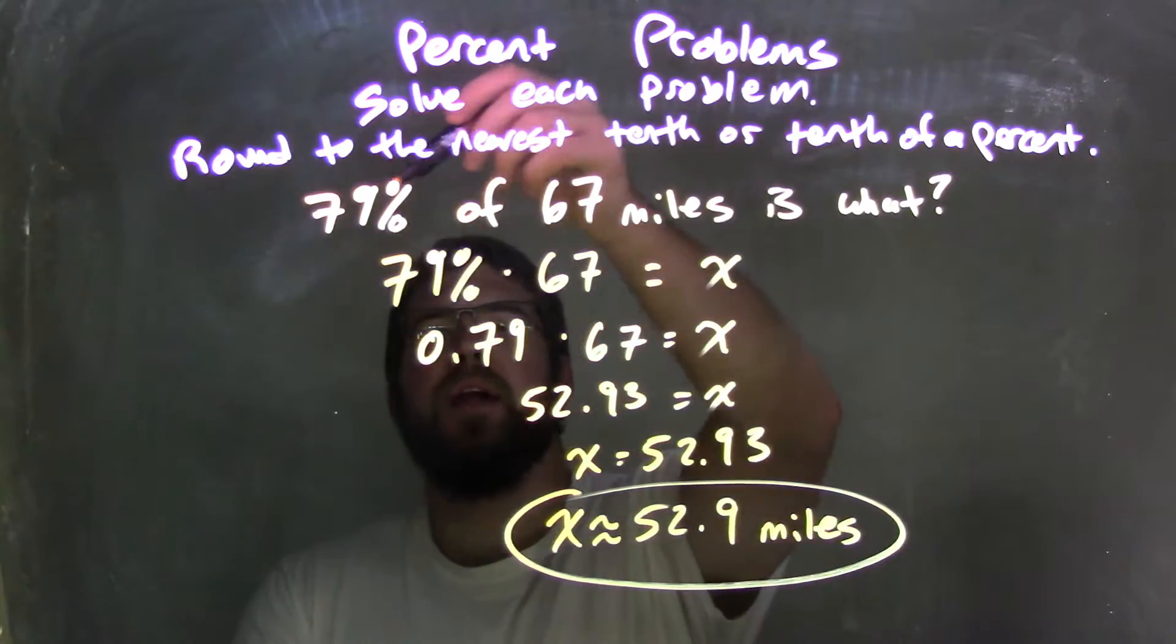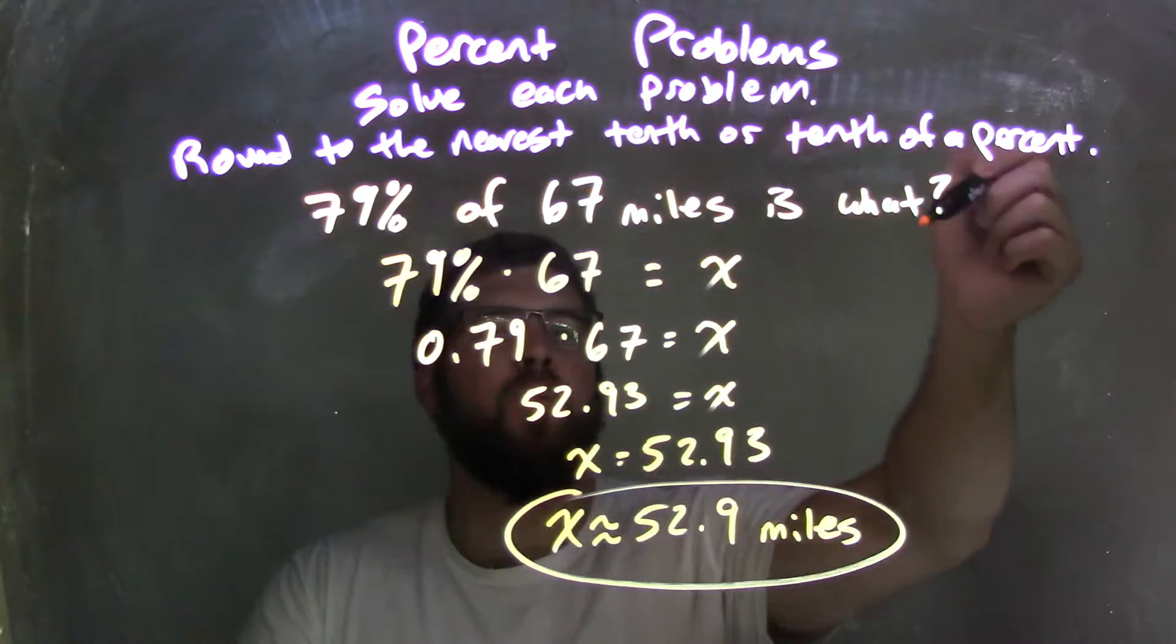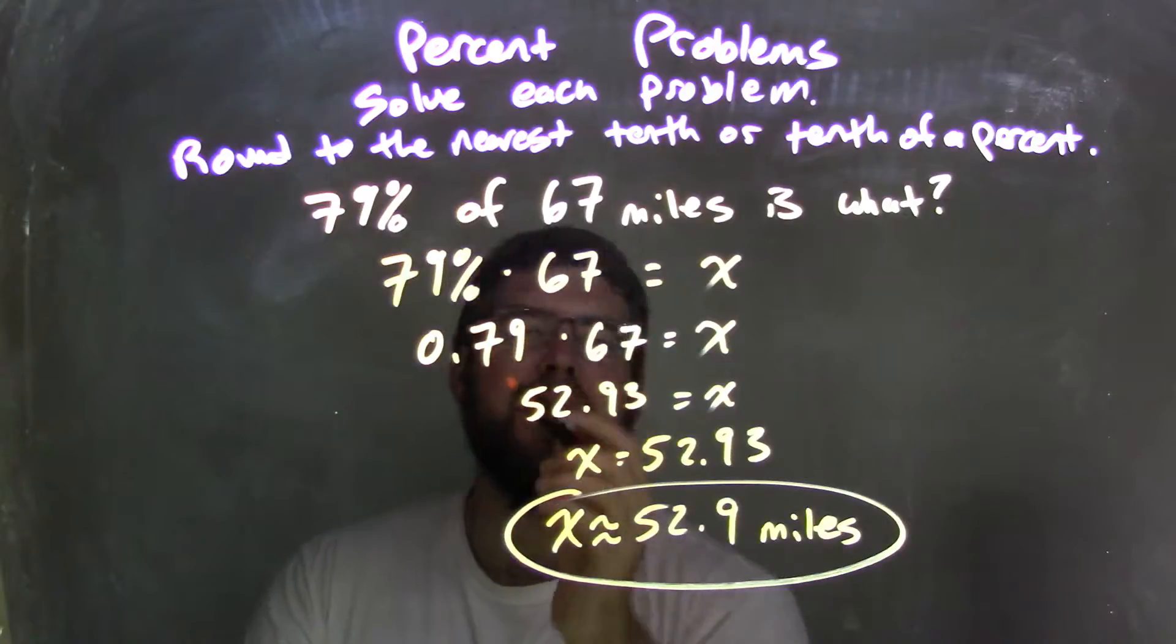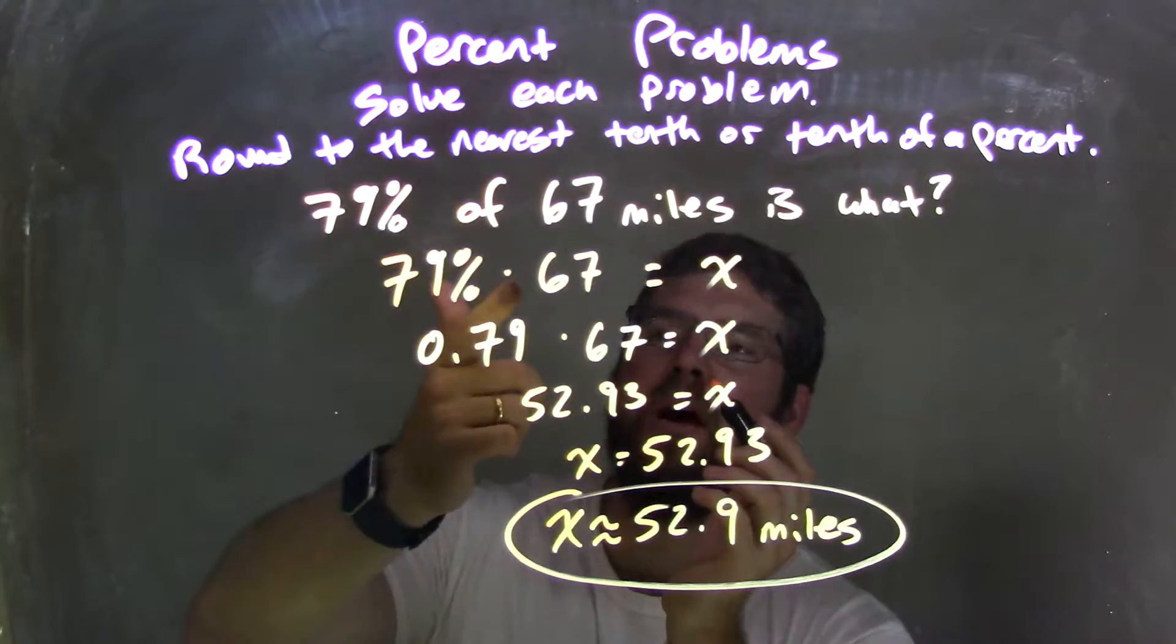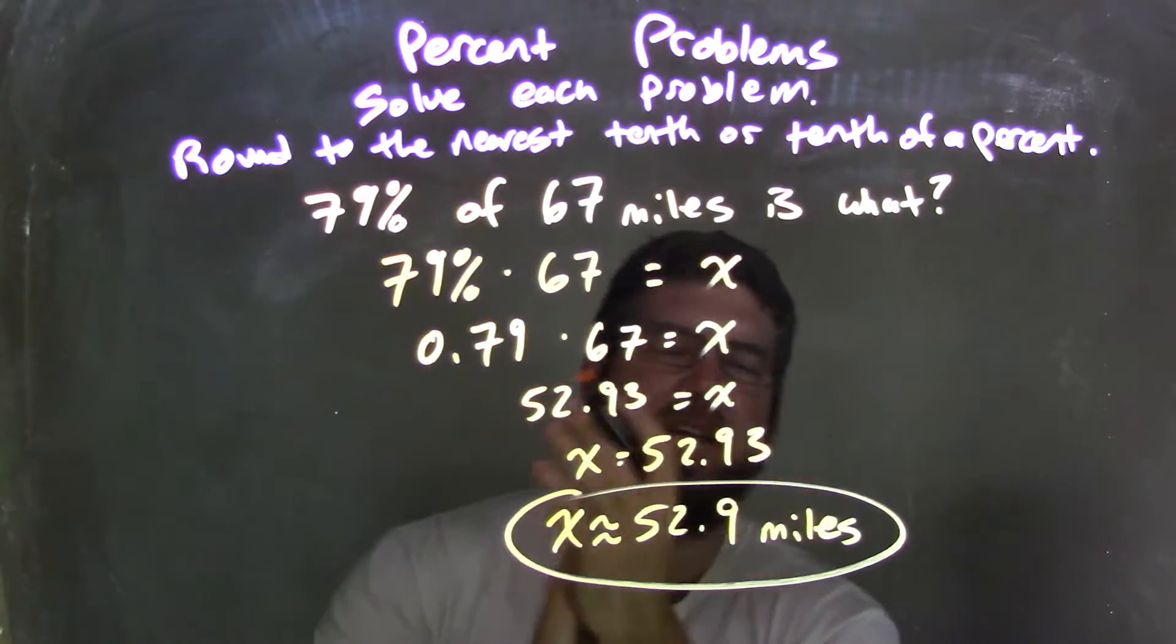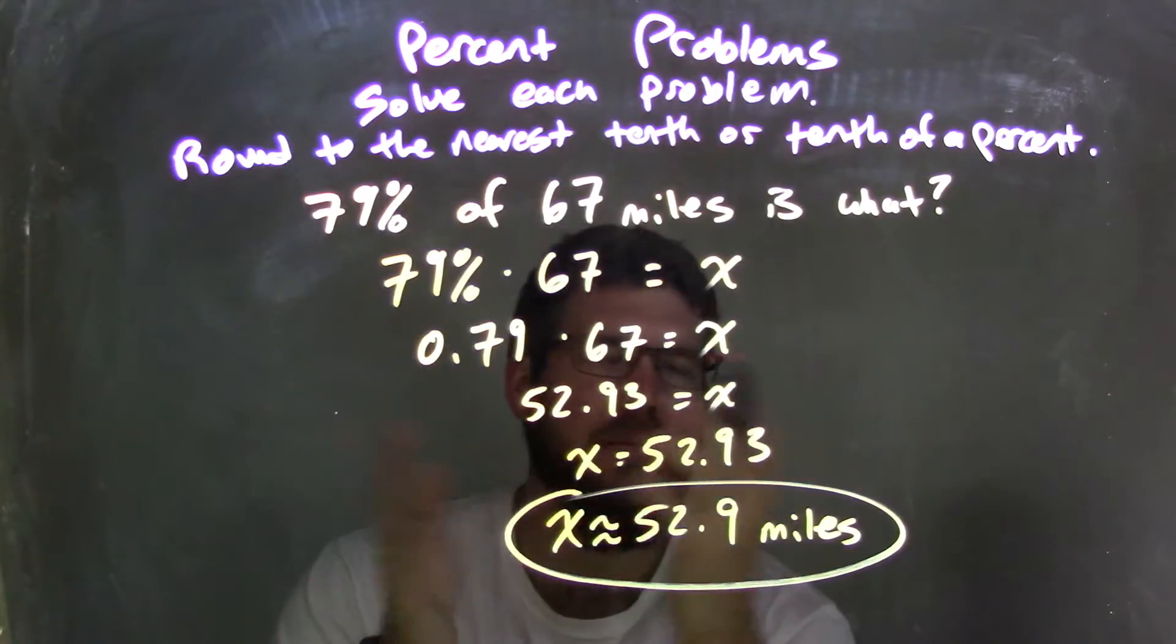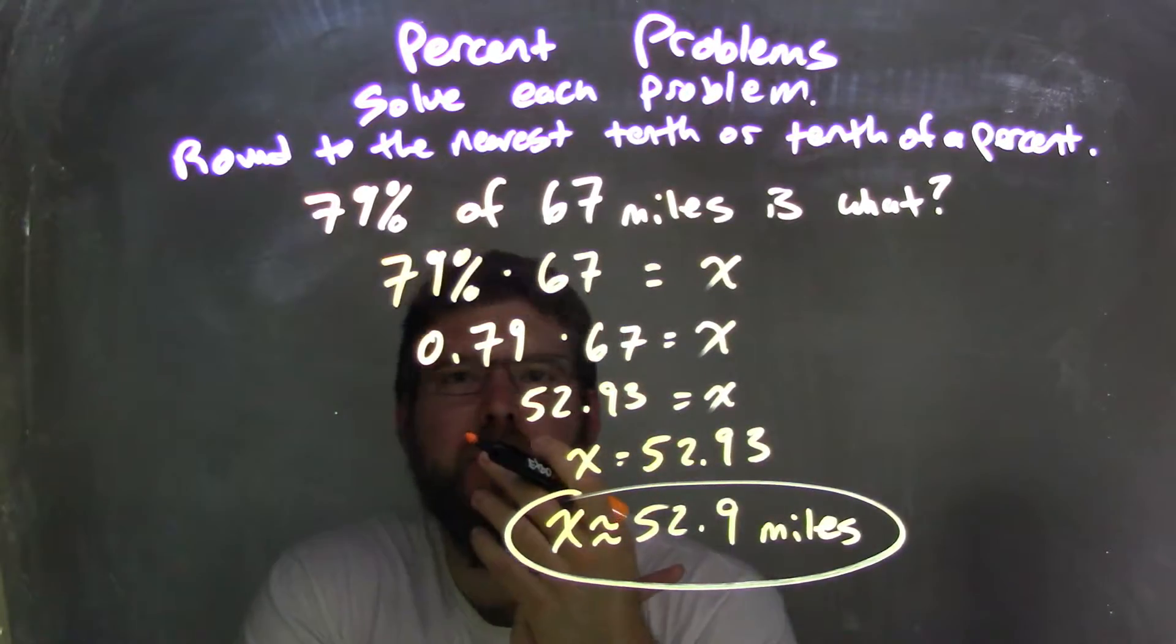So let's recap here. Given the problem, 79% of 67 miles is what? I took it and rewrote this to be an equation. 79% of, multiplied by 67, equals x. Some variable, you can pick whatever you want. I chose x. It's kind of the standard, the staple.